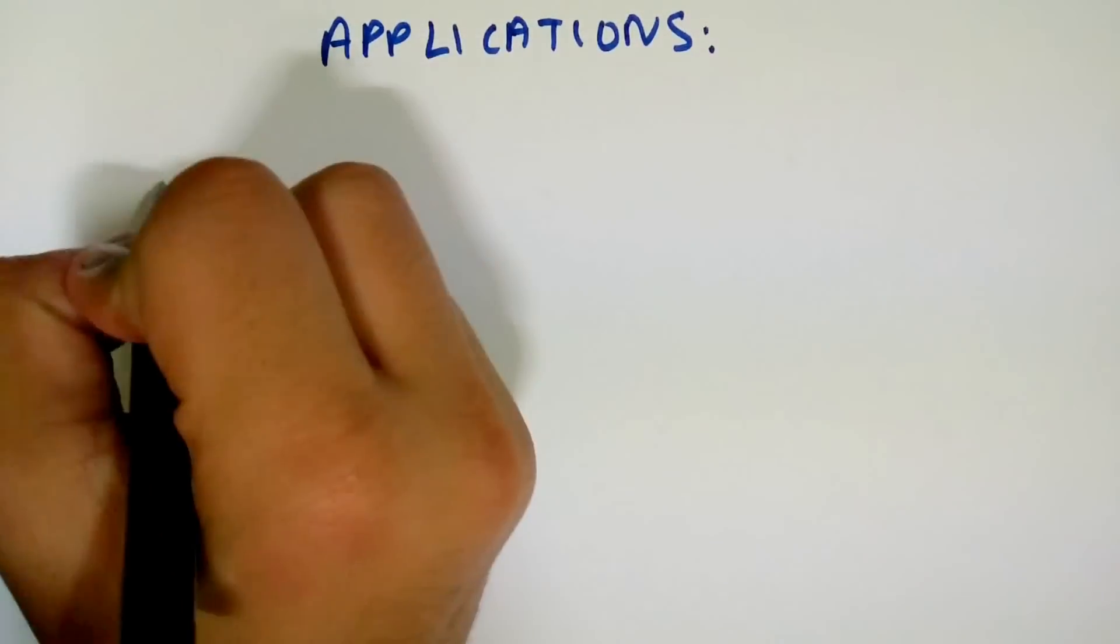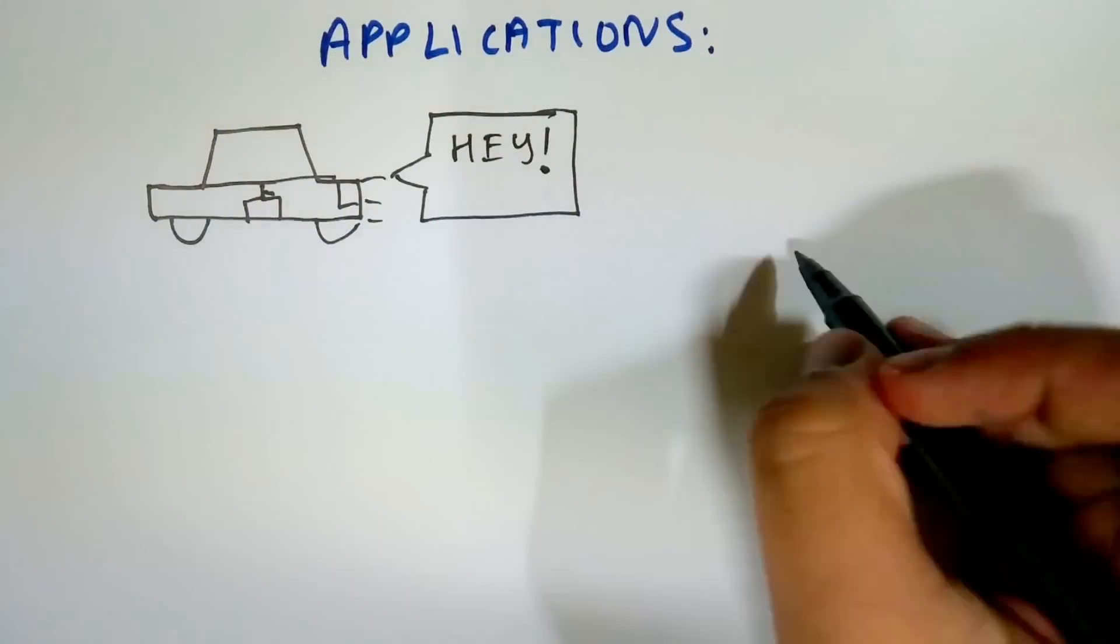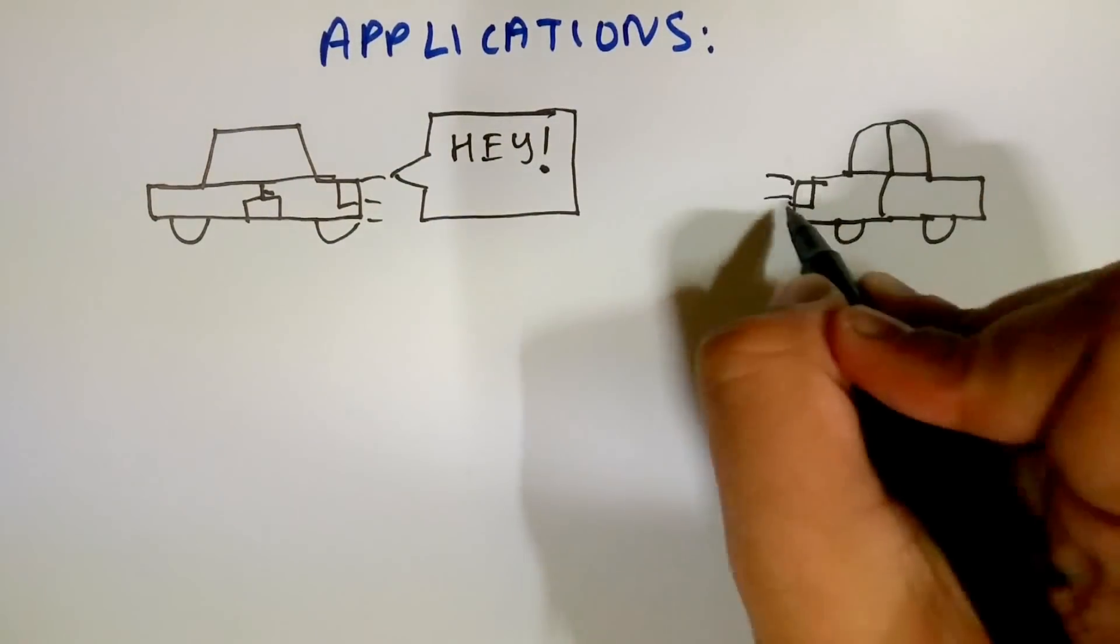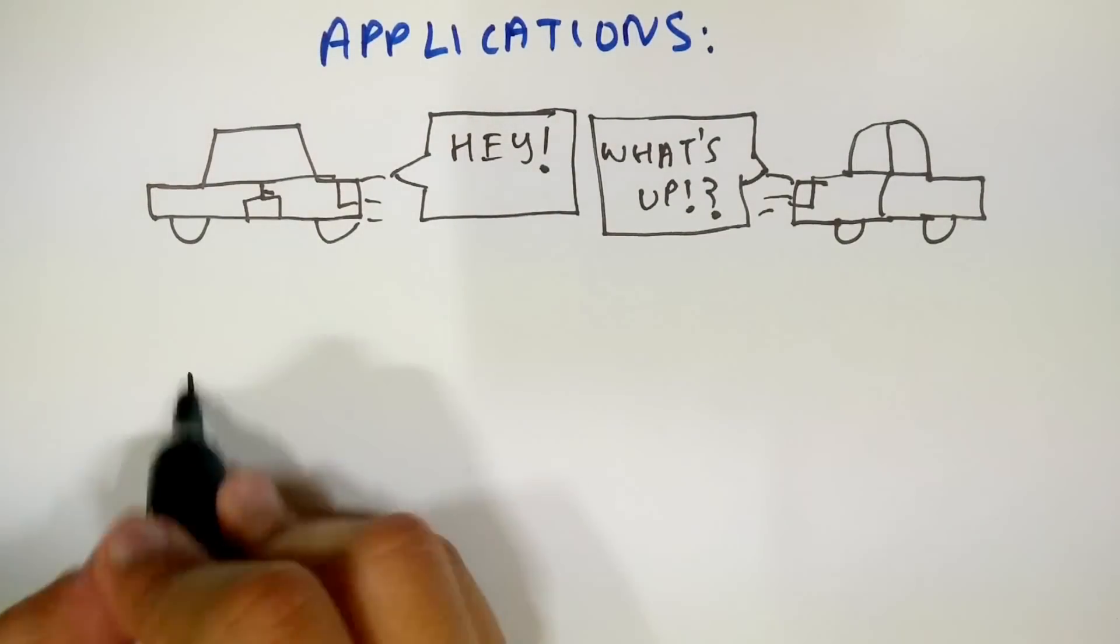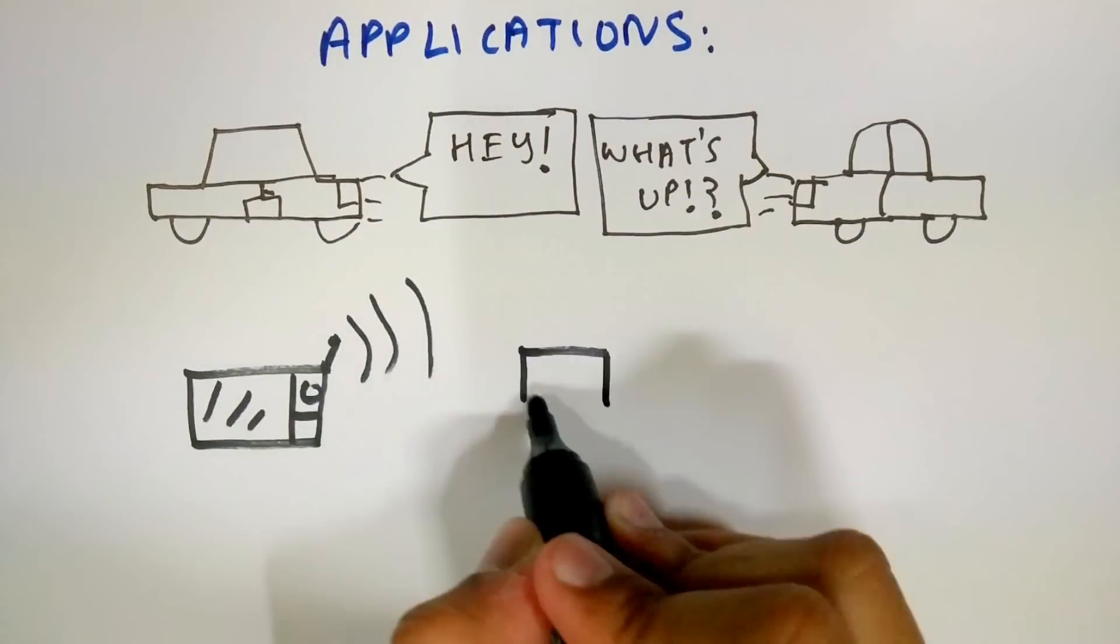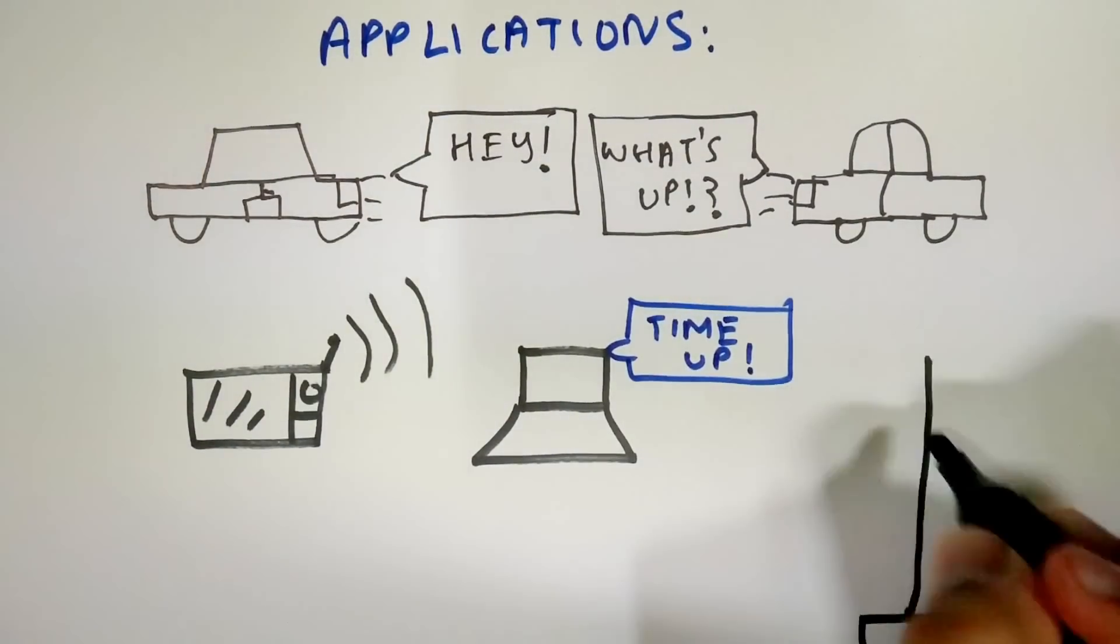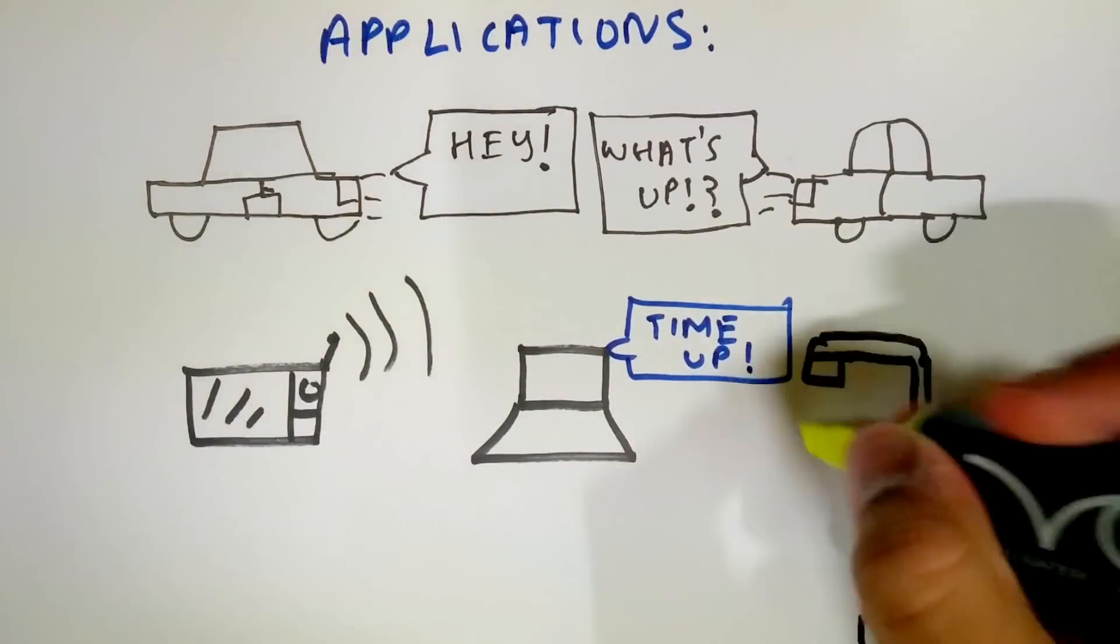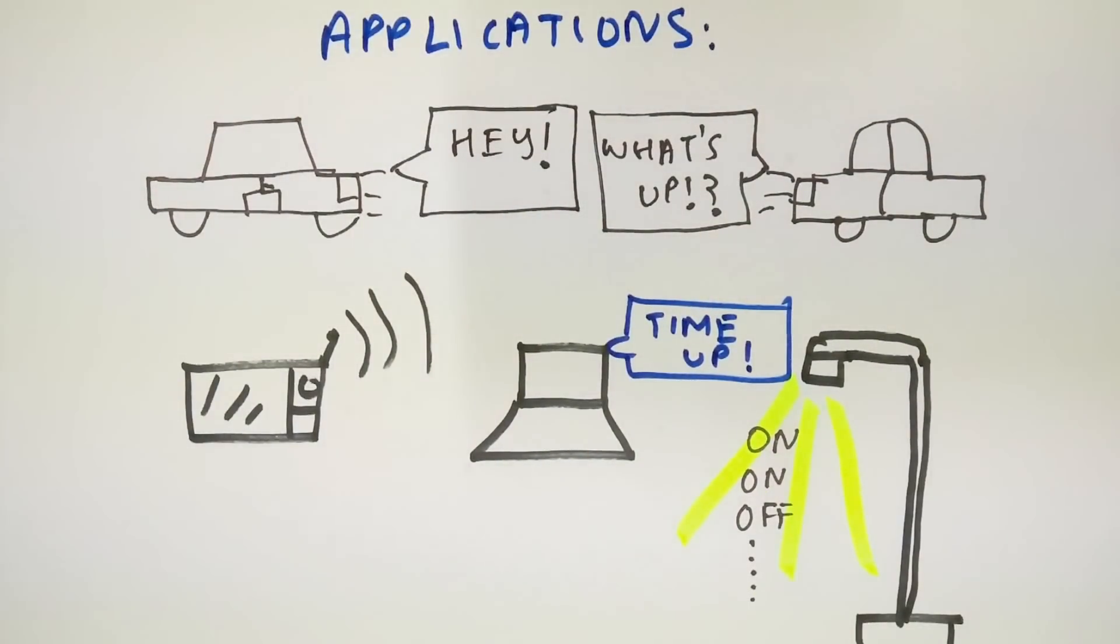Li-Fi has tons of applications. LEDs in the headlights and tail lights of self-driving cars can help them to communicate with each other more efficiently thus avoiding accidents. The concept of the internet of things can become much more achievable. Imagine every street light being an internet access point. The possibilities are endless.